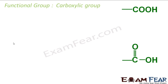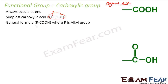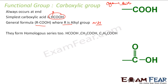Then we have something called the carboxylic group. They are also called carboxylic acids, or organic acids, or mechanic acids. This group also occurs at the end. The simplest is HCOOH, because the carbon is already there and you add H. The general formula is R-COOH, where R is any alkyl group or hydrogen, because HCOOH also exists.